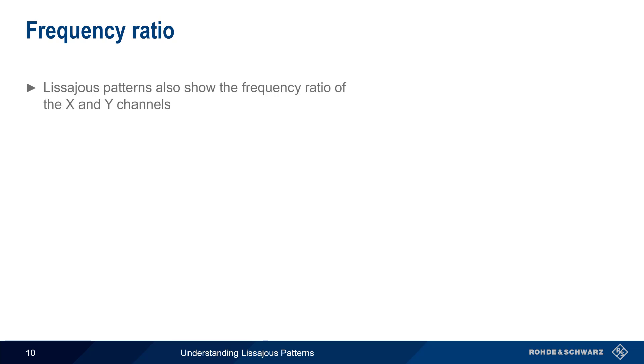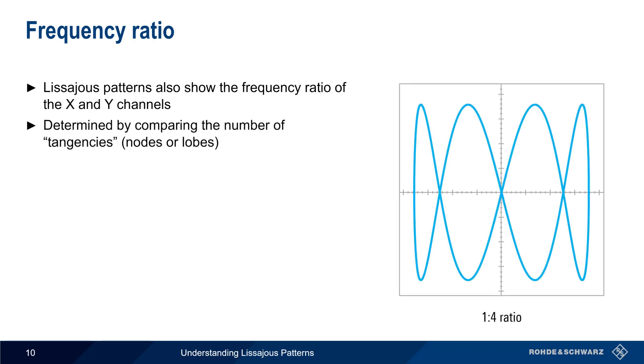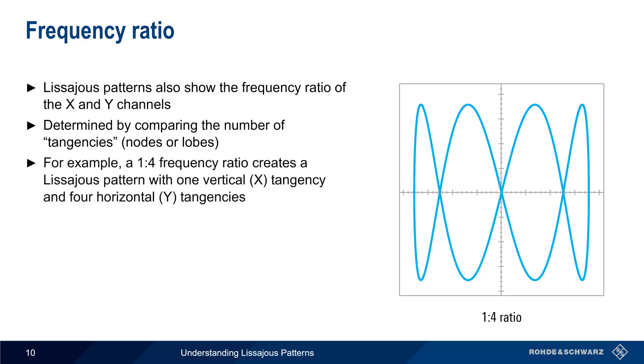Lissajous patterns also show the frequency ratio of the X and Y channels. This can be done by counting the number of tangencies, that is, the number of nodes or lobes in the pattern. For example, if there is a 1 to 4 frequency ratio between the X and Y channels, then the resulting Lissajous pattern will have one vertical tangency and four horizontal tangencies.